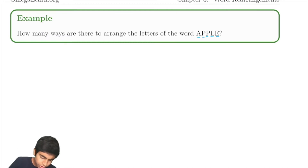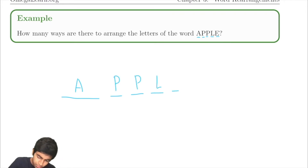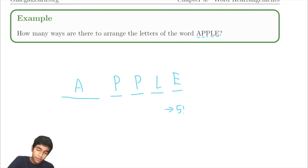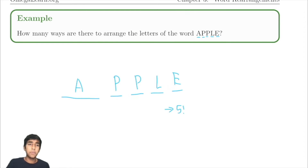So would it just be five factorial? We've got A, P, P, L, E — five choices for the first digit, four for the second, three for the third, two for the fourth, and one for the last. There are five factorial ways to arrange five objects in a line. Is it just five factorial?